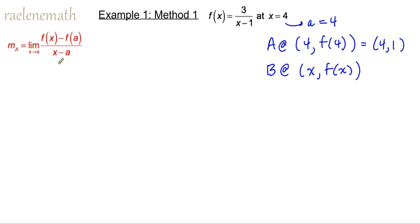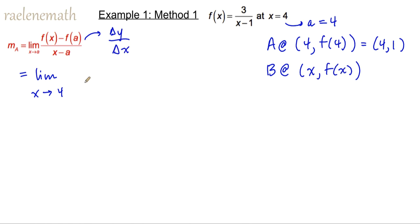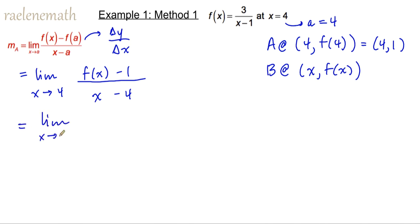We're going to use our big concept of calculus: the tangent slope is equal to the limit as the x-coordinate of the second point approaches the x-coordinate of the first point, or the point of tangency, of the delta y over delta x secant slope expression. So we get y2 minus y1 all over x2 minus x1. We make our substitution here, and we see that the f of x function gets replaced with 3 over x minus 1.